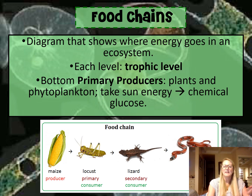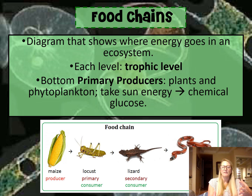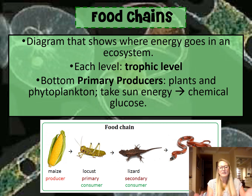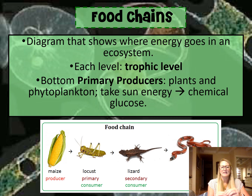Each level is called a trophic level, and organisms are classified at different trophic levels depending upon what they eat. At the very bottom of a food chain are our primary producers — the organisms taking sunlight and converting it into chemical energy called glucose. Plants and phytoplankton would definitely be in that category.